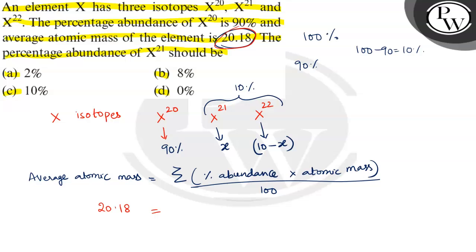First percentage, 90 into atomic mass, atomic mass 20. This is the first isotope. Second isotope, 21 atomic weight, percentage X, X into 21 plus third, X^22 percentage 10 minus X, X into 22 divided by 100.